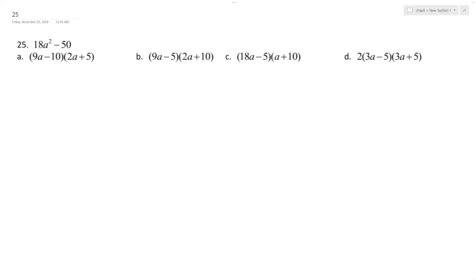All right, so we want to solve the following problem. What I want to do is factor out a 2 coefficient, so I end up with 9a² - 25.